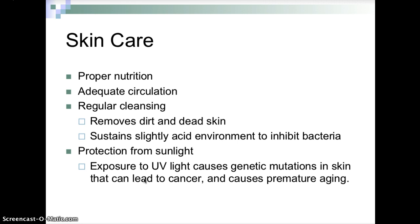Proper skin care includes proper nutrition, adequate circulation to supply oxygen and nutrients, and regular cleansing to remove dirt and dead skin cells, which sustains a slightly acidic environment to inhibit bacterial growth. Protection from sunlight is critical — UV exposure causes genetic mutations called UV photodimer mutations. In a DNA molecule, instead of nucleotides bonding with the nucleotide on the opposite strand, they join together on the same strand, which can lead to cancer and premature aging.